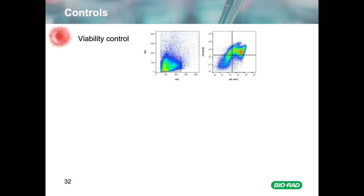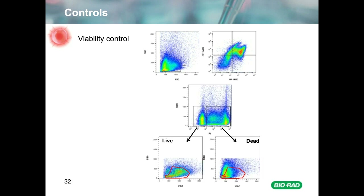Using a simple forward and side scatter gate, we can see CD11b and GR1 staining in mouse bone marrow. DNA-binding dyes such as PI or 7-AAD are not membrane permeable and are excluded by live cells but taken up by dead cells, making them perfect as viability dyes. They can be easily added directly to samples after they've been stained with antibodies. Dead cells with compromised membranes can be identified as they are fluorescent and then removed from your final analysis.